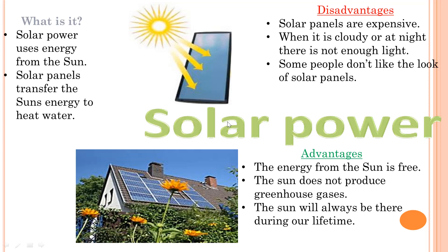Solar power uses energy from the sun. Solar panels transfer the sun's energy to heat water. Advantages: energy from the sun is free, the sun does not produce greenhouse gases, and the sun will always be there during our lifetime. Disadvantages: solar panels are expensive, when it is cloudy or at night there is not enough light to generate energy.